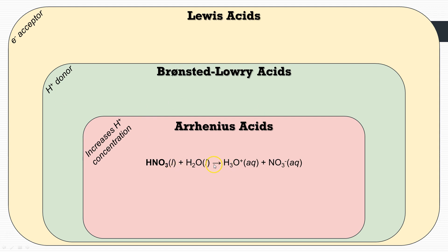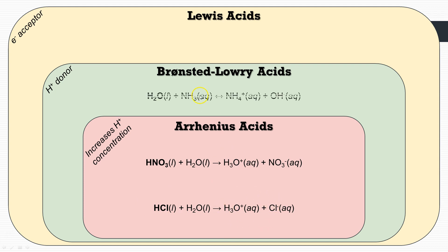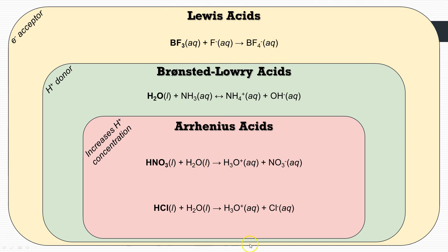For example, nitric acid and hydrochloric acid are Arrhenius acids — they produce cations in solution. For Brønsted-Lowry, HCl donates its proton to ammonia, turning it into the ammonium cation — no need to reference hydronium ions. For Lewis acids, boron trifluoride accepts an electron pair from a fluoride anion to form a complex. So BF3 is the Lewis acid and the fluoride is the Lewis base. Remember, Lewis acid is the biggest definition, encompassing all the others and then some.